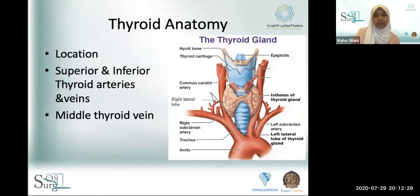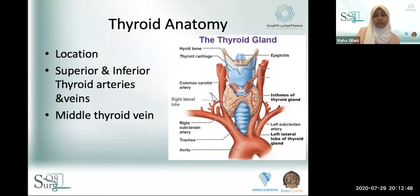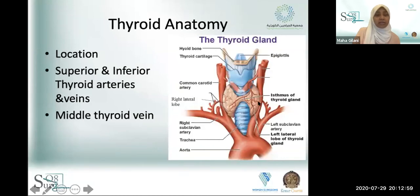Thyroid anatomy: the thyroid is located in the mid to lower neck across the upper tracheal rings. It has two lobes and an isthmus, and it's located in a really tight spot surrounded by very important and vital structures of the aerodigestive tract, the great vessels, and lymphadenopathy in the neck.